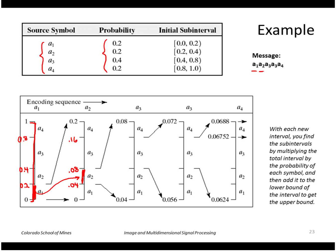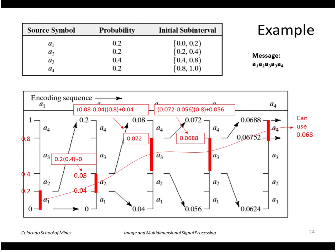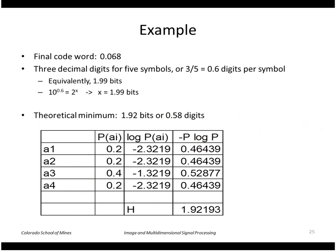We keep going. Here is the final result for this message of these five symbols. We had five symbols, so we do this decomposition five times, and we find that the resulting sequence can be represented by any decimal number between 0.06752 and 0.0688. For example, we could use 0.068, so the final code word is 0.068.